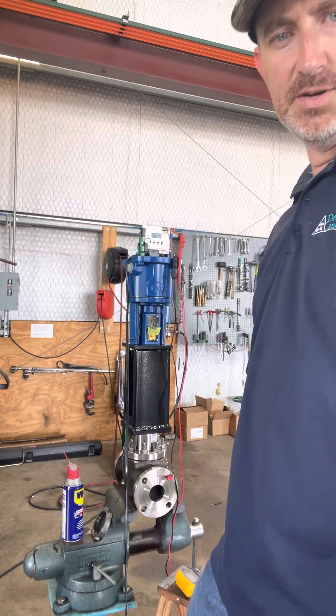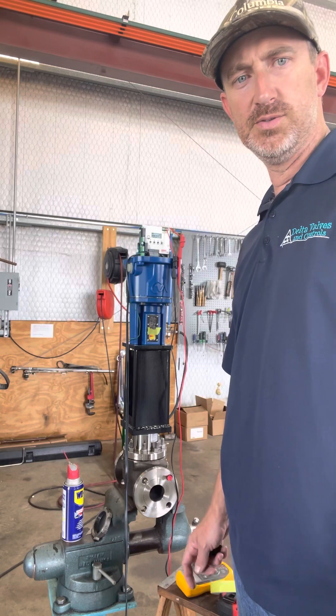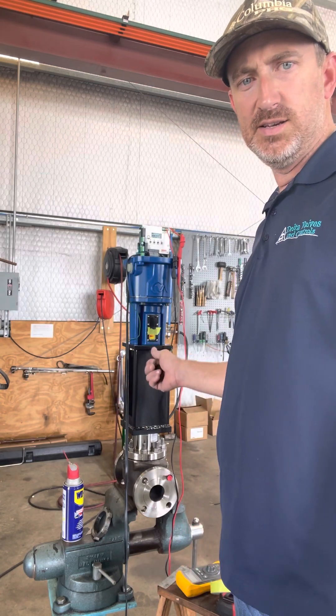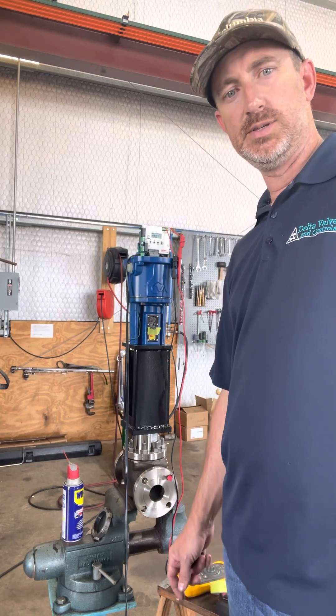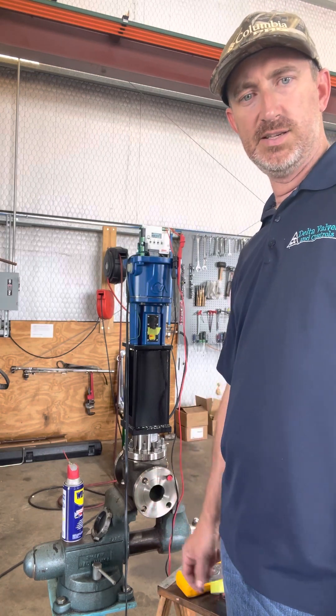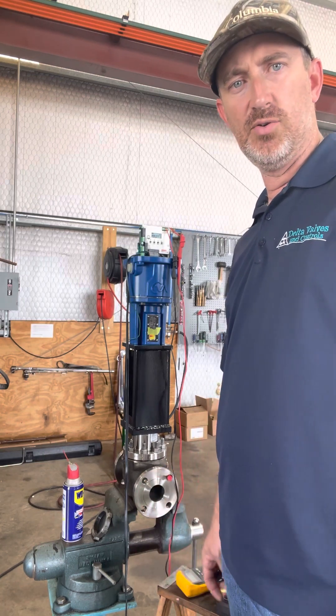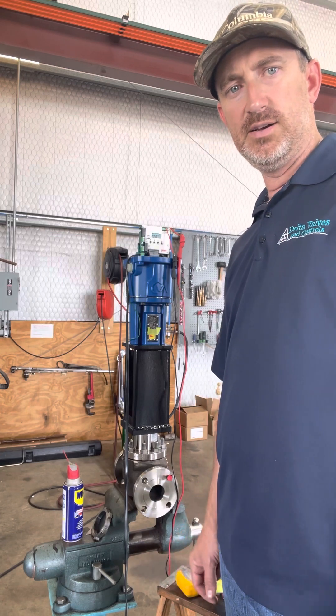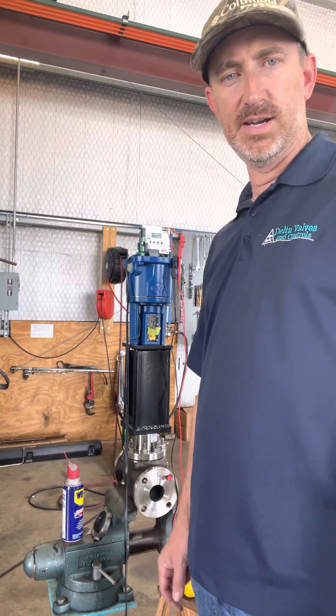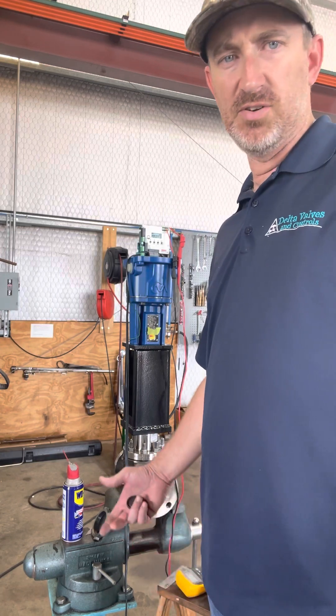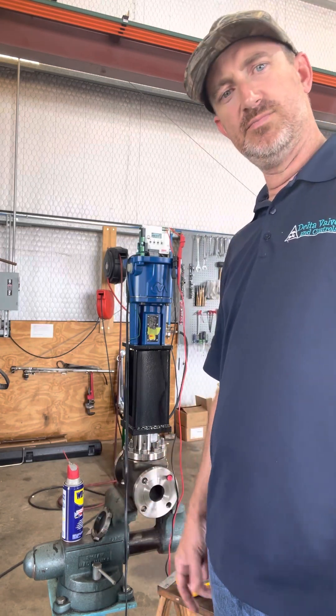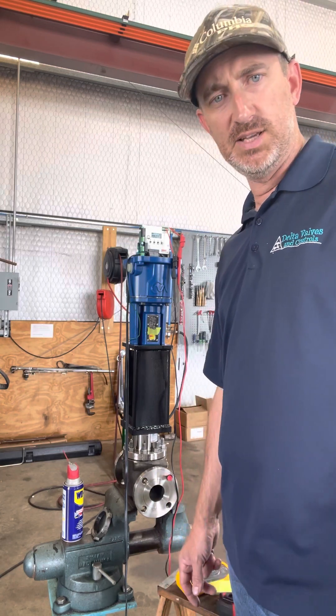Howdy everyone, Clint Rawls here with Delta Valves and Controls. What we got today is a CML 750 made by Rotor. We've got it mounted on a CVS 2-inch ET control valve and just want to make things easier for guys calibrating these in the field. Instructions aren't that bad, but I like videos, my shop guys like videos, so let's go through it.